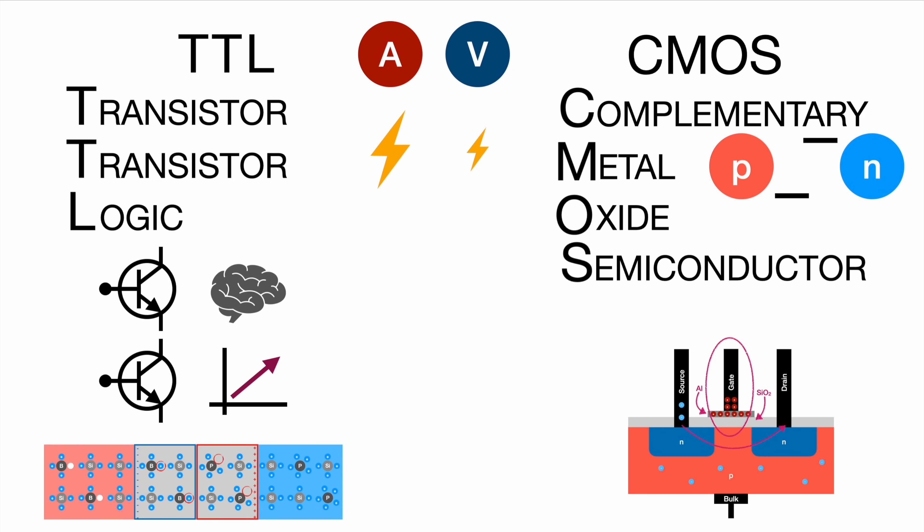Besides that there is another big advantage of CMOS. It's something called rail to rail. This means that you can capitalize on your supply voltage almost completely. When you have a low, the CMOS goes really down to basically zero volts, and the high will basically go up all the way to the supply voltage. So let's assume five volts. You would have the high at five volts and the low at zero volts.